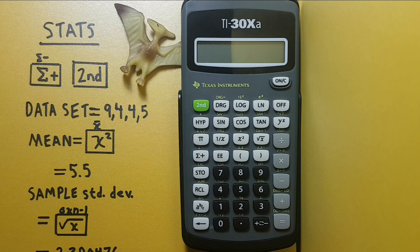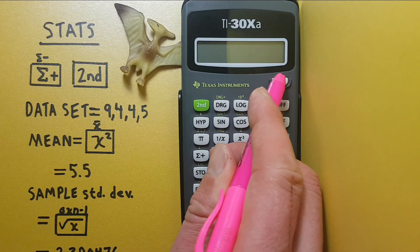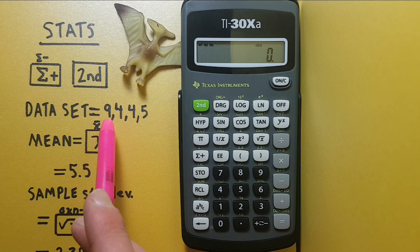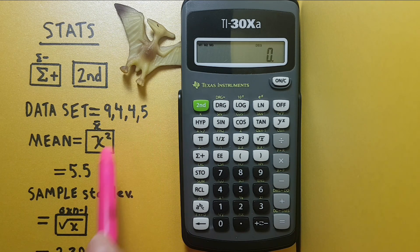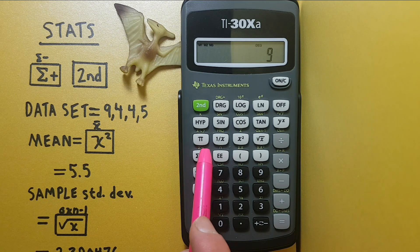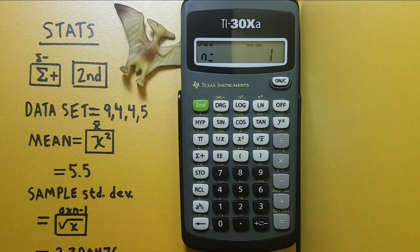All right, let's get started. Initially we have to enter our data set. For this experiment our data set will be 9, 4, 4, 5. We enter this by entering the numbers onto the screen and then pressing the sigma plus. We now see an n equals 1, which tells us we have one number in our data set.